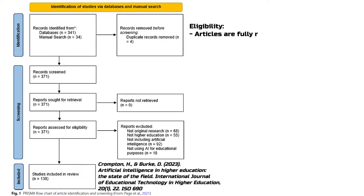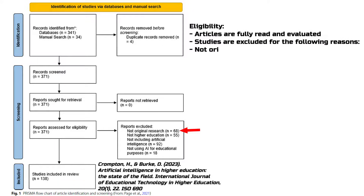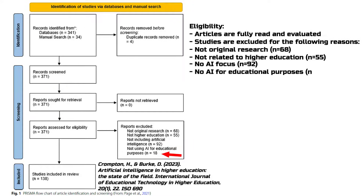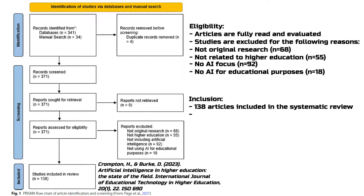Some studies were excluded for the following reasons: no original research — 68 articles were not original studies but rather reviews themselves or commentaries; not in the field of higher education — 55 studies were not related to the field the authors were interested in; no artificial intelligence — 92 studies did not deal with AI; and no use of AI for educational purposes — in 18 studies, AI was not used for educational purposes. Inclusion: finally, 138 articles were included in the systematic review.